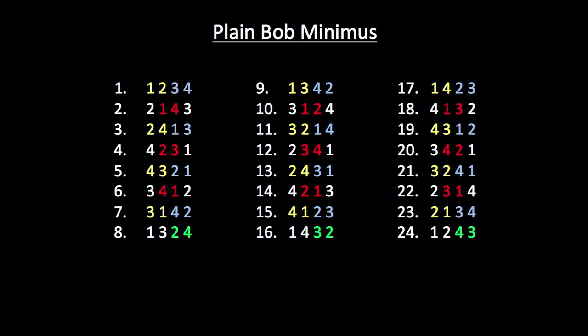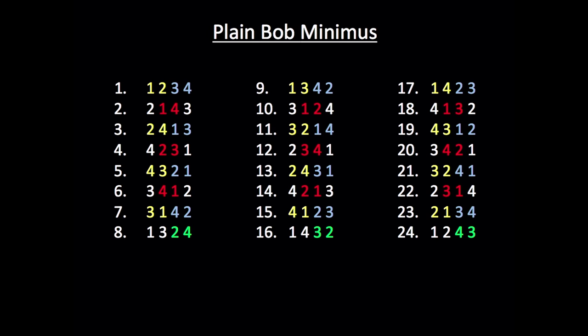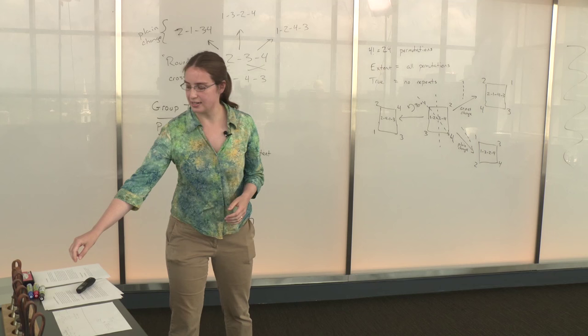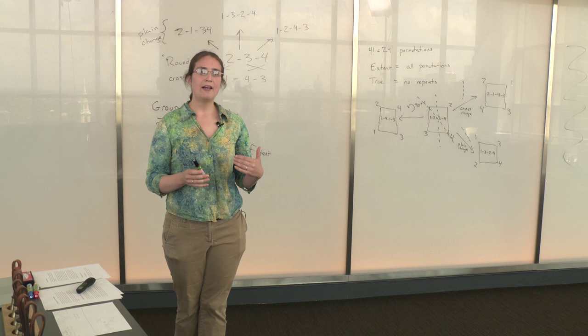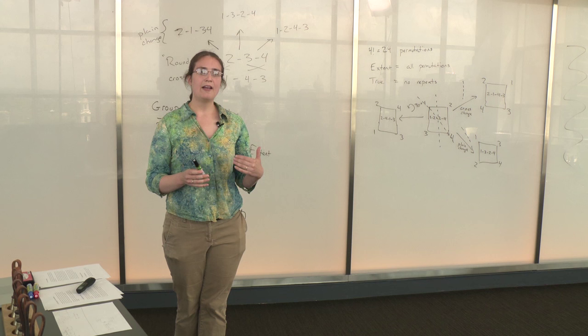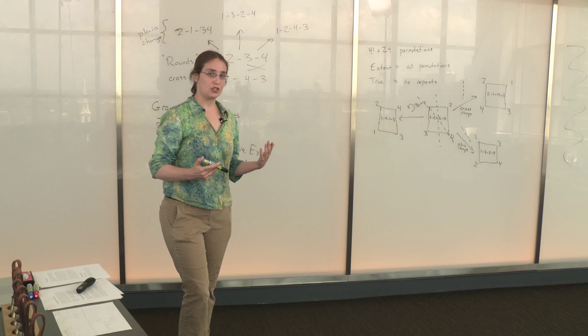And this idea essentially is very related to the group theory concept of cosets. The columns, as I've displayed it for plain bob minimus, are actually cosets of the dihedral group of that first column. And the idea that the cosets are the same length and contain different changes essentially very much relates to the proof of Lagrange's theorem written by the famous mathematician Lagrange in 1771 and then proven by others over the course of the 1800s. So cosets turn out to be very important in essentially proving truth in these change-ringing compositions.